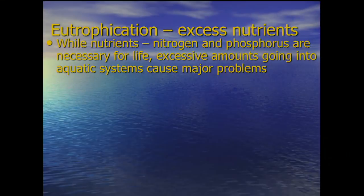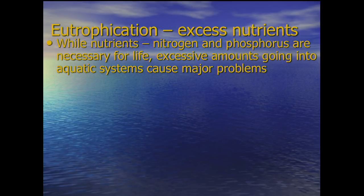The first type of pollution I'm going to talk about is what we call eutrophication, which is basically too much of a good thing. Nutrients - everybody knows you need nutrients, nutrients are essential for life. Two major nutrients are nitrogen and phosphorus, and we need those in our food. But when too much of it gets into the water, it can cause problems.